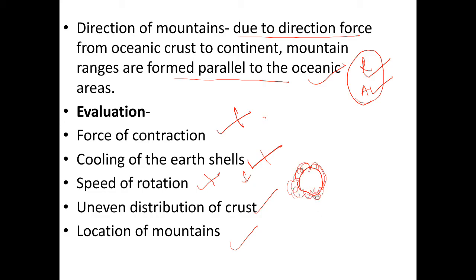He says that all parts of the crust experience contraction, but mountains are seen only near the margins of the continents. The contraction and cooling took place throughout the continent according to the theory, but mountains are located only along the margins of continents and not everywhere. For these reasons, this theory was severely criticized by many scholars.